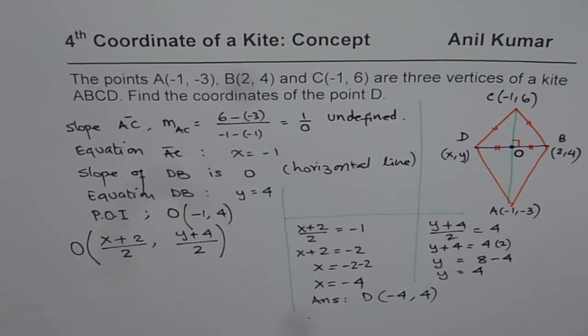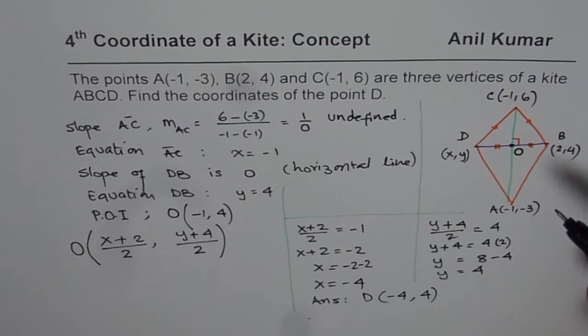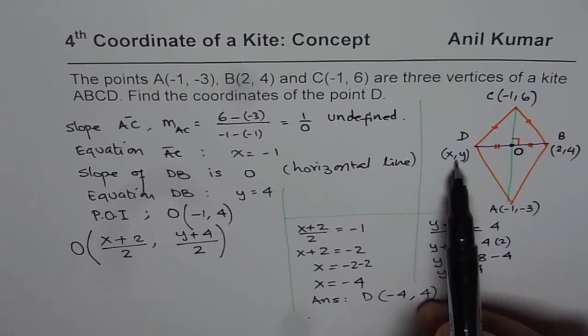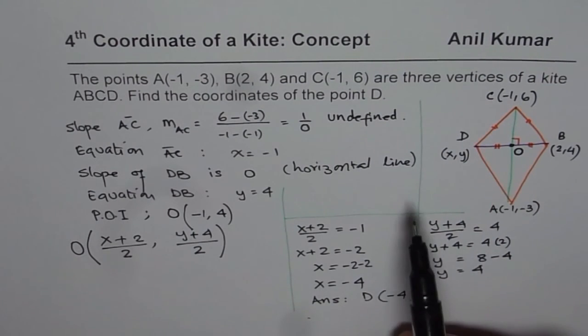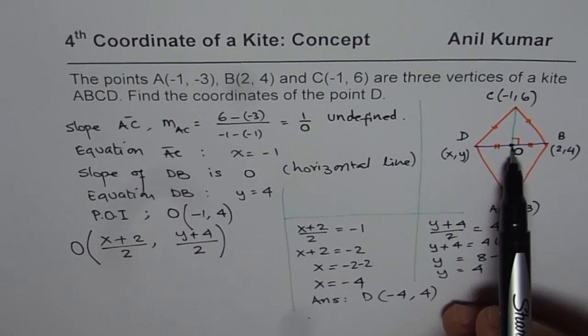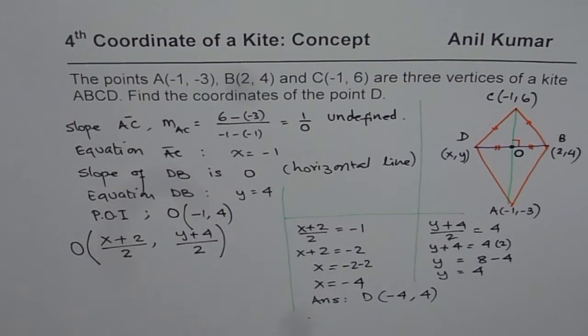So that is how we can find the fourth coordinate of a kite in the given situation. As you can see, our example was very simple. We took one of the diagonals as vertical, the other one has to be horizontal. Important thing here is that B and D are same distance away from O. Once we find O, it is very simple to find D using the midpoint formula.